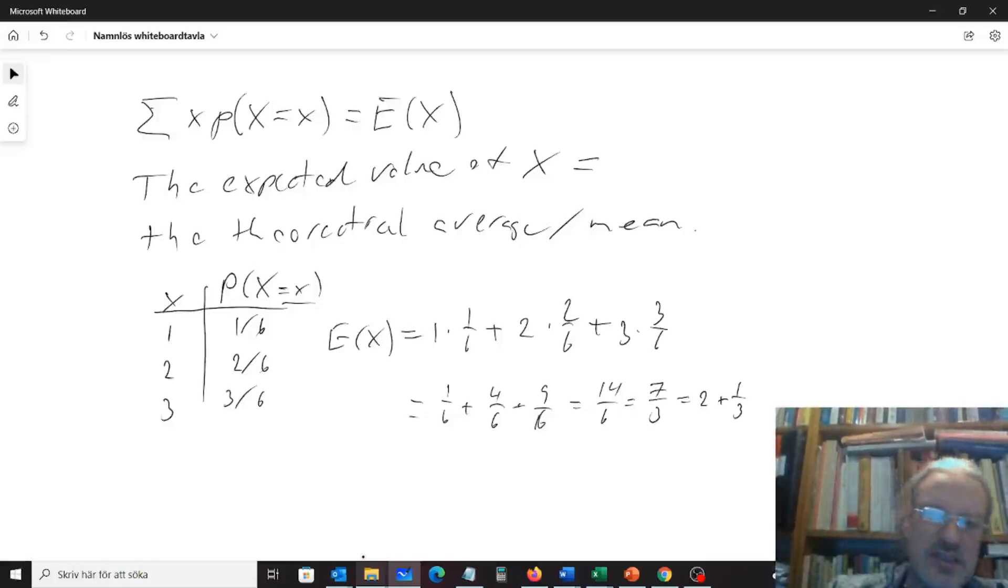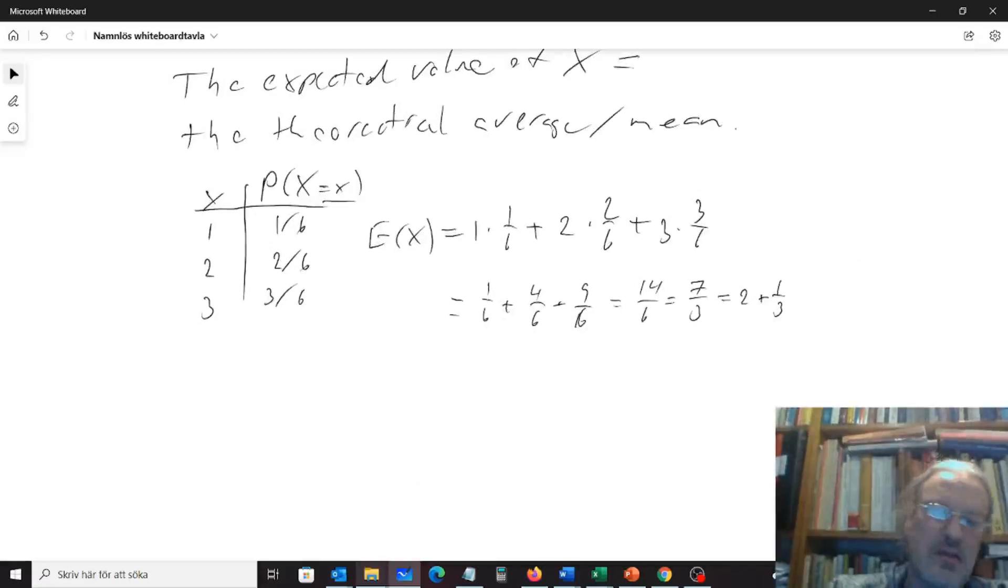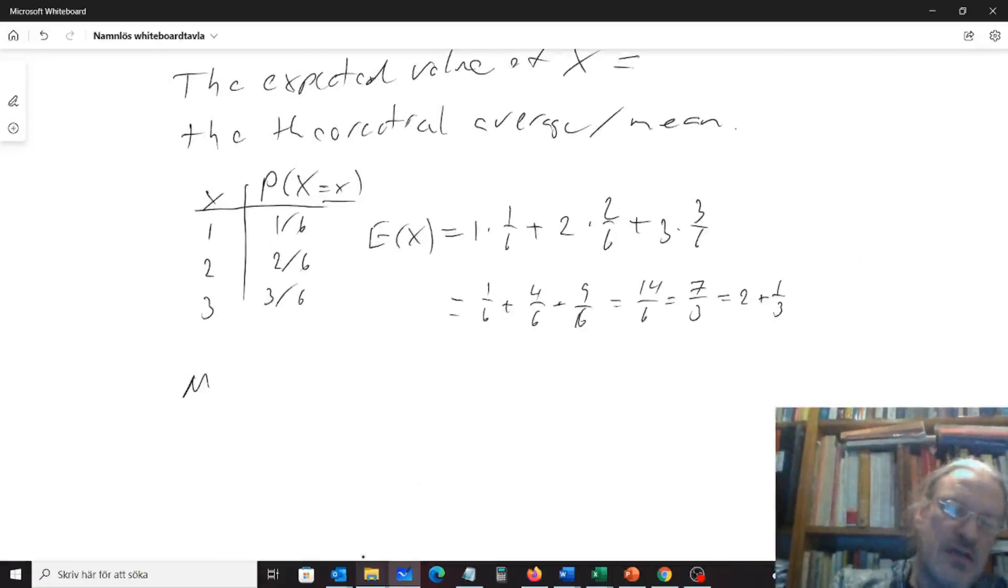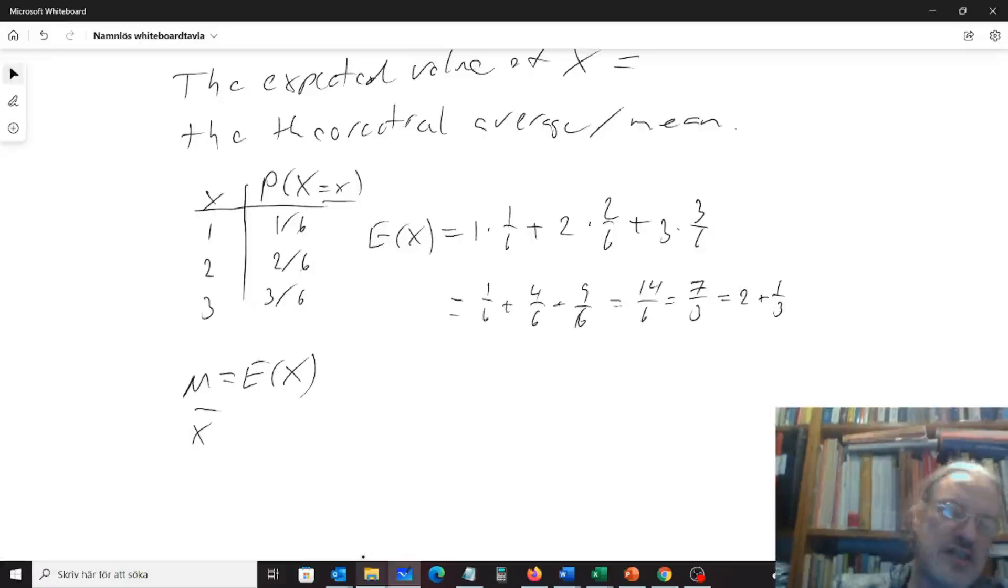So this is our expected value, and the expected value is also written with this little Greek letter mu, so mu equals the expected value of X. And the difference of this and the average is that the average that we write with an x in line above is that average is from some actual experiment. If I throw this strange die a bunch of times and then calculate the average, I will get some value.